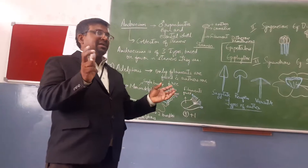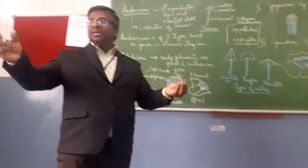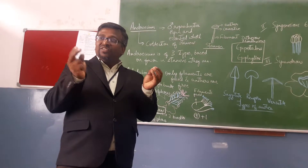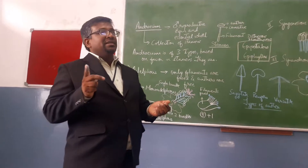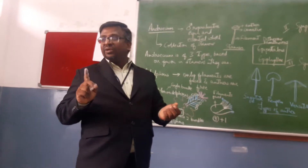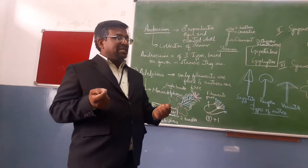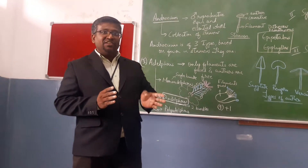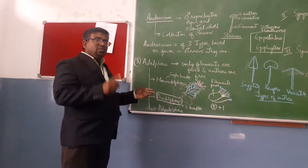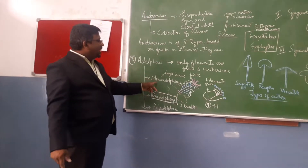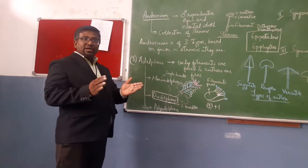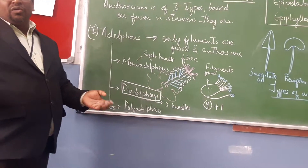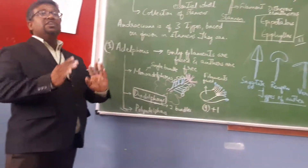Polyadelphous condition can be noticed in citrus flowers. In polyadelphous, the stamens form many bundles — for example, 3 stamens form one bundle, 4 stamens form another, and 2 stamens form a third. So there are many bundles where filaments are fused. To summarize: monoadelphous has a single bundle, diadelphous has two bundles, and polyadelphous has more than two bundles.